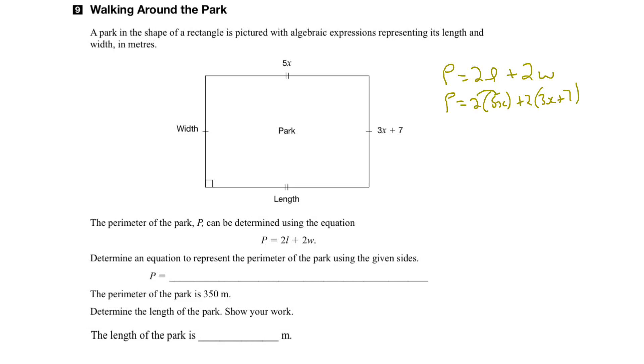We can multiply 2 by 5x, and that would give us 10x. And then we can multiply the 2 across the brackets, and we would get 6x plus 14.